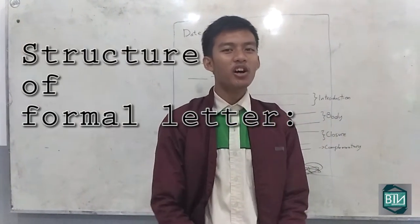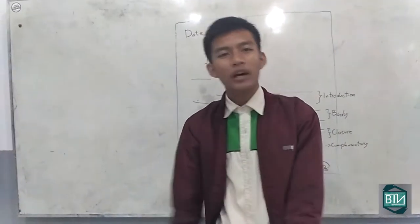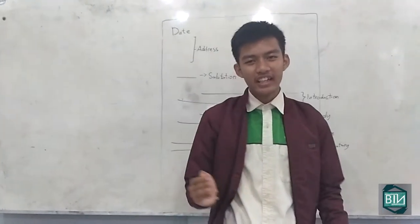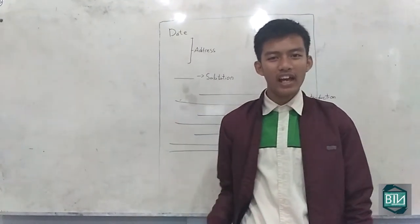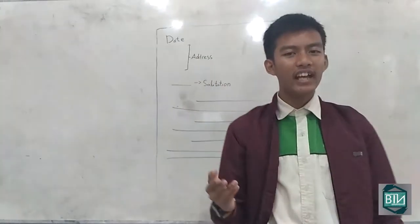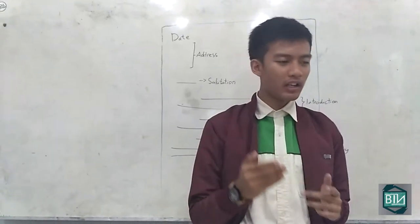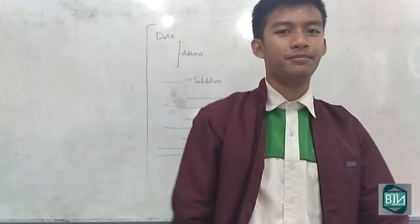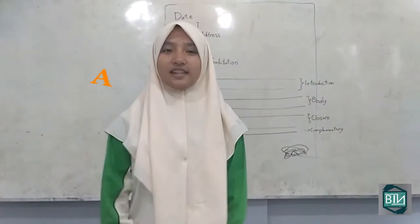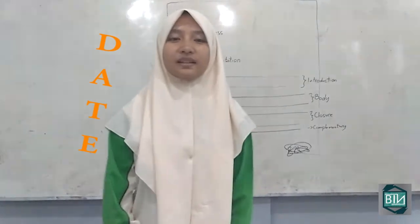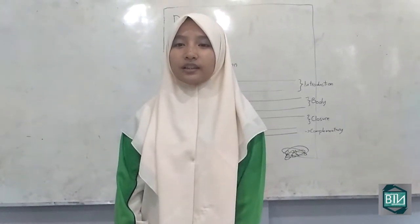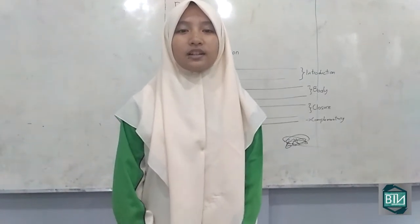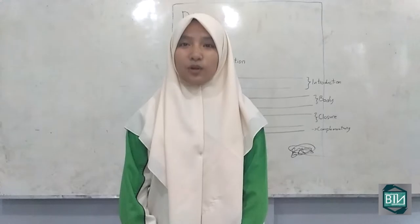Now about the structure of a formal letter. First, the addresses: your address should be written in the top right-hand corner of the letter. The address of the person you are writing to should be written on the left, starting below your address. Second is the date. Different people place the date on different sides of the page — you can write it on the right or on the left, after the address you are writing to. Write the month as a word.